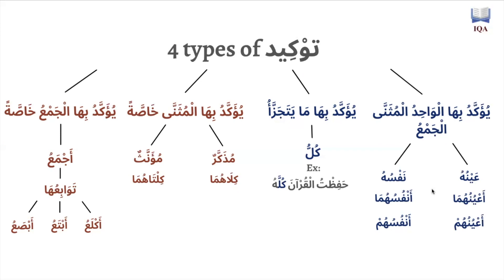Nafs and a'ayn can also be used to emphasize the dual (muthanna). If speaking about al-zaydani, I say ja'a al-zaydani anfusuhuma — the two Zayds came, anfusuhuma, themselves — or a'aynuhuma, themselves. For the plural, I say ja'a Muhammadun anfusuhum, them themselves, or ja'a Muhammadun a'ayunuhum, them specifically. So nafs and a'ayn can emphasize what is singular, dual, and plural.